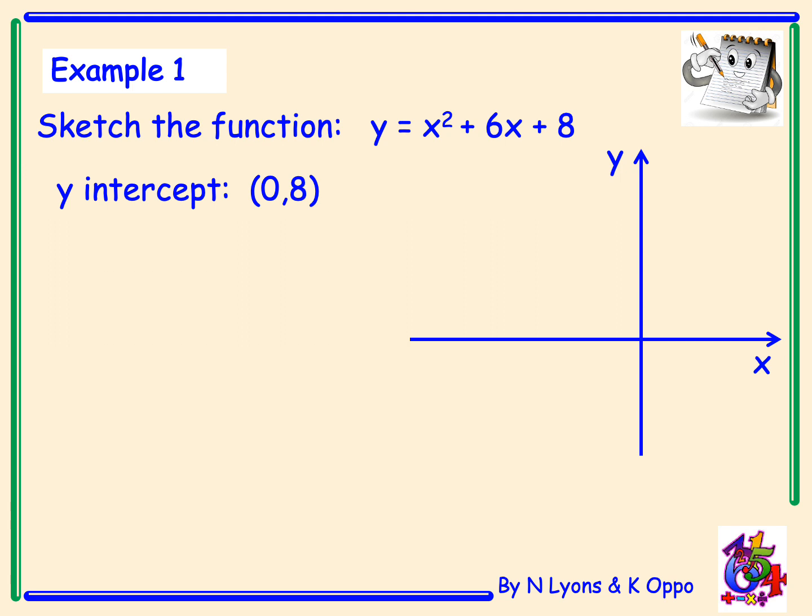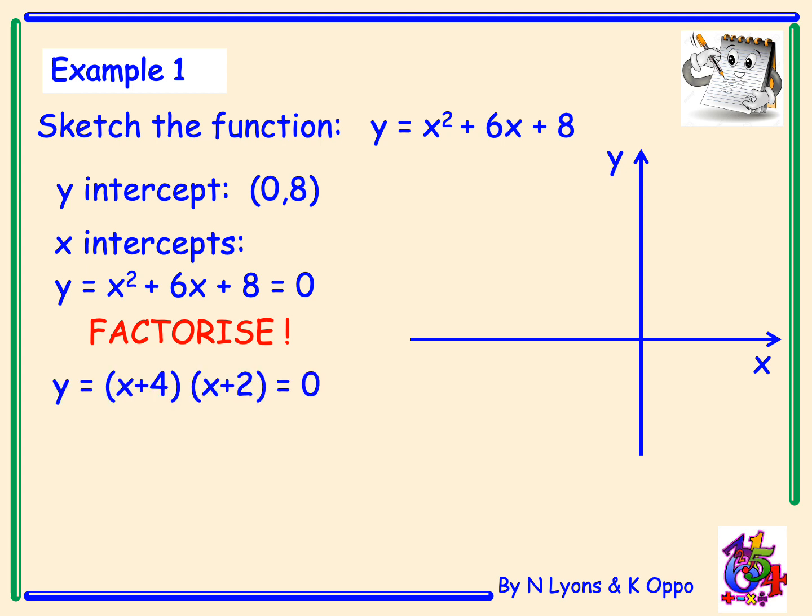Now we need to know where our function cuts the x-axis. So for the x-axis intercepts, we're going to have to set the function to 0 and solve it. Now to solve a quadratic function, you already know that we're going to have to factorize it first. So we have to factorize x² + 6x + 8. That's going to give us y = (x + 4)(x + 2) = 0. So if y = 0, then either x + 4 = 0 or x + 2 = 0. And solving this, we have x = -4 or x = -2.